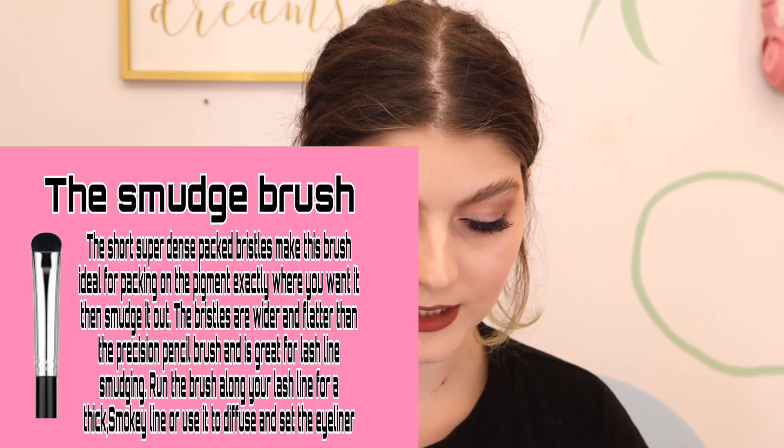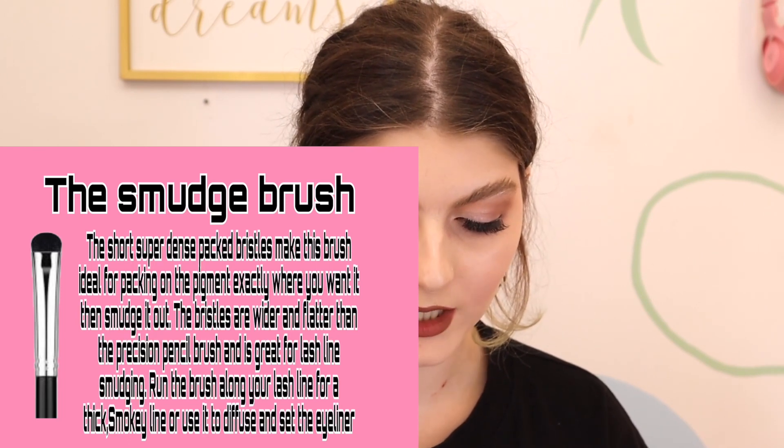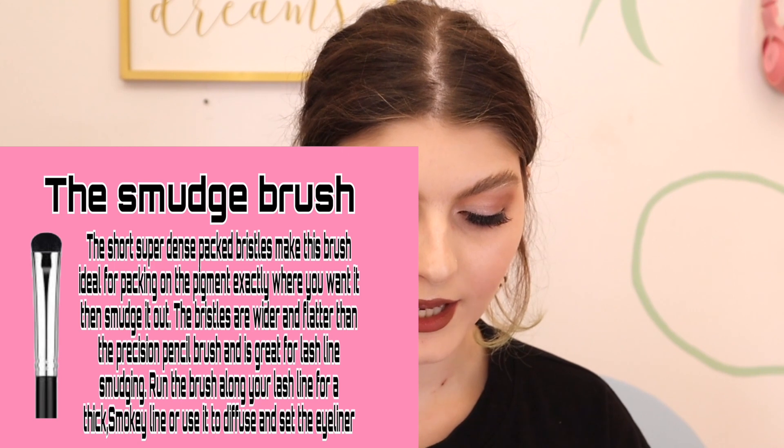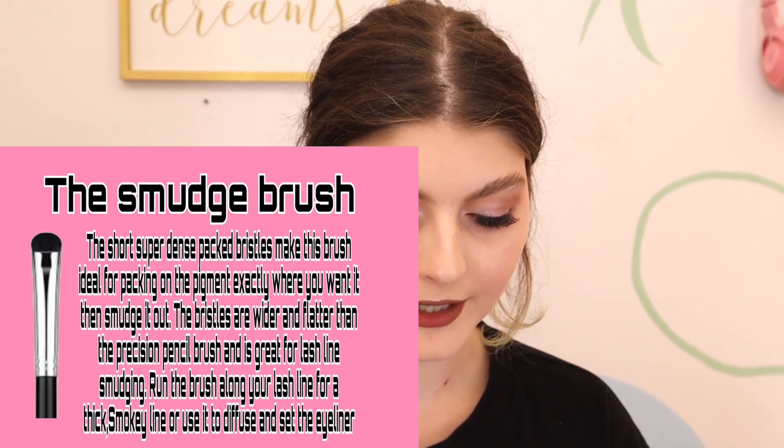The smudge brush has short, super dense, packed bristles making it ideal for packing on pigment exactly where you want it and then smudging it out. The bristles are wider and flatter — more precise than a pencil brush. It's great for the lash line. Run the brush along your lash line for a thick smoky line, or use it to diffuse the color. When you put on a gel eyeliner, you can take that brush and quickly disperse and smudge it out for a more smoky look.